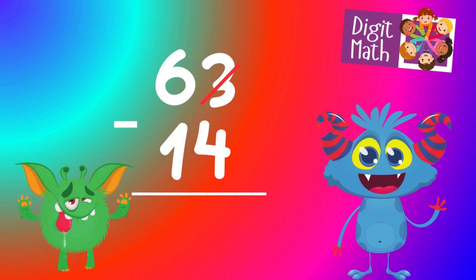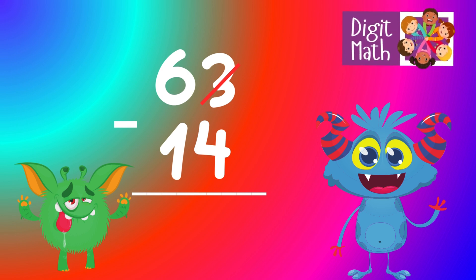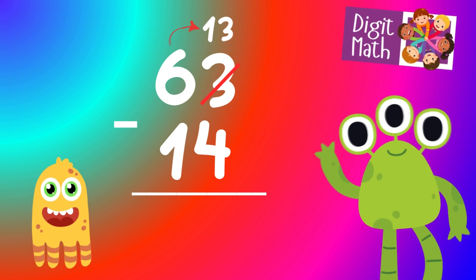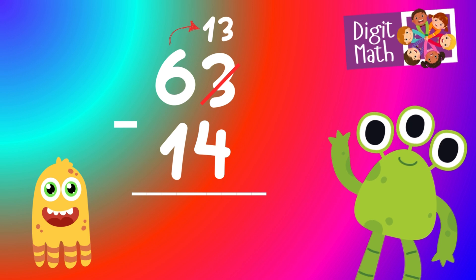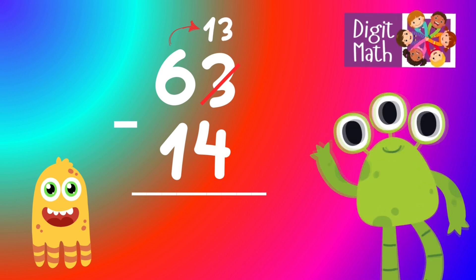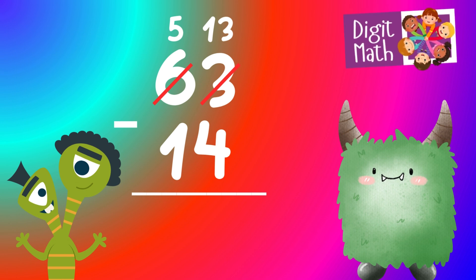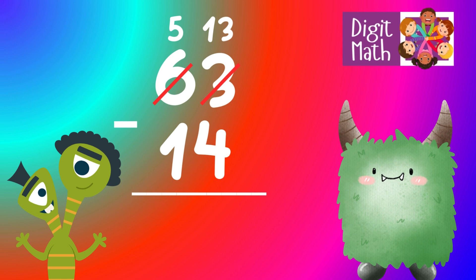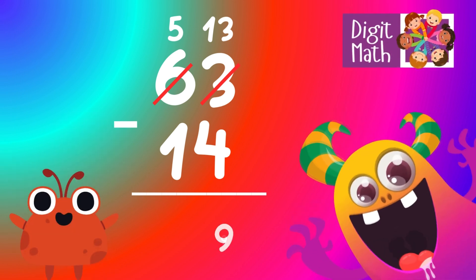In the Units column, we have 3 minus 4. Since it's not possible to subtract 4 from 3, we need to borrow from the Tens column. In the Tens column, we have 6. We take 1 from the Tens, leaving 5 in the Tens column and turning the Units column into 13. Now we have 13 in the Units column. Subtract 4 from 13, which equals 9.